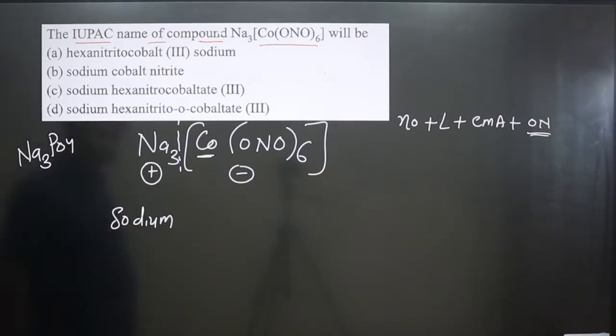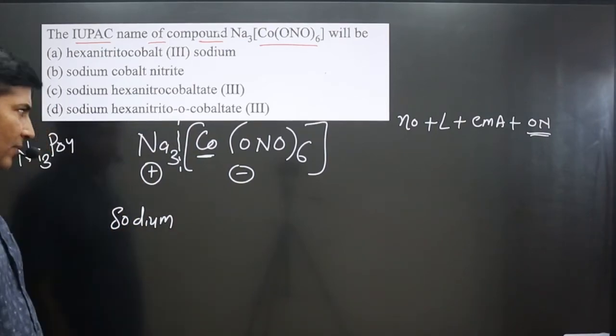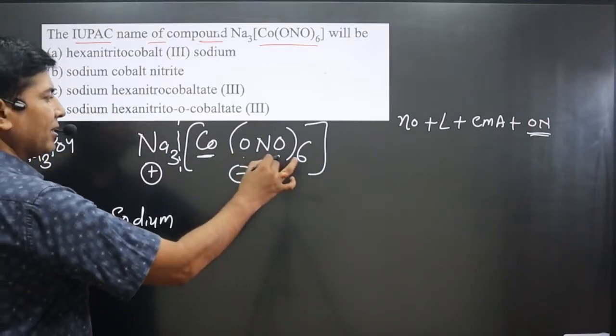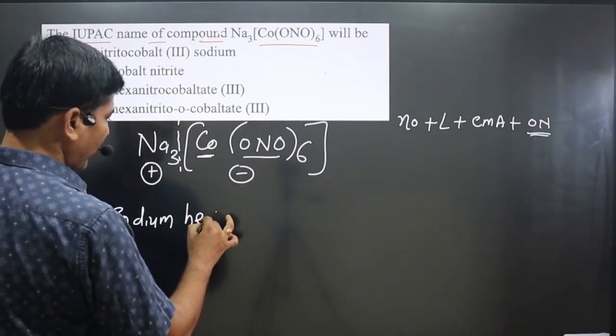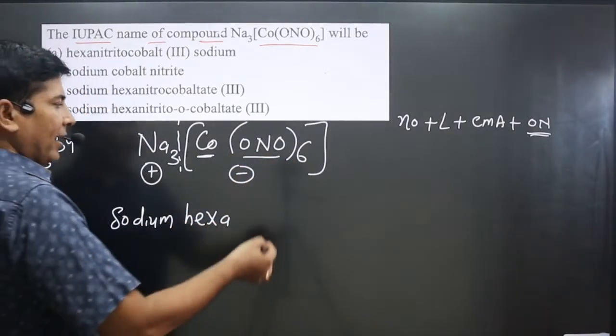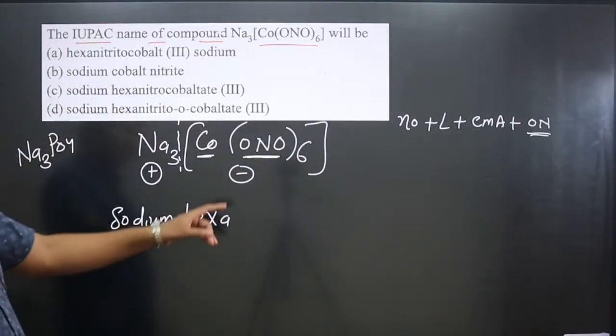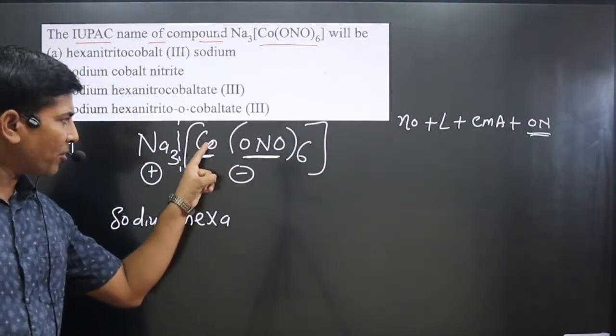Sodium, then we follow this order: number of ligands. How many ligands are there? Six. So I mention hexa. And this ONO is an ambidentate ligand, and in this case, oxygen is forming the bond with the central metal atom.